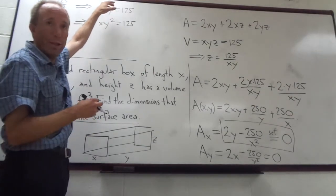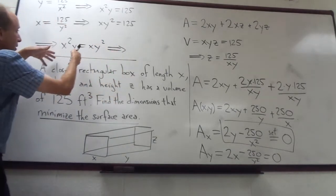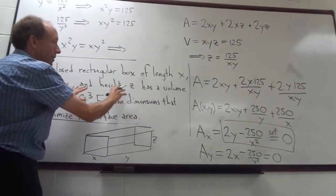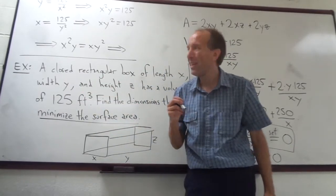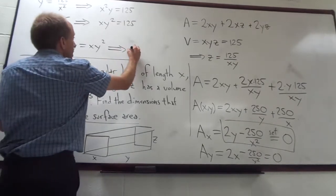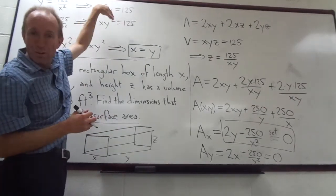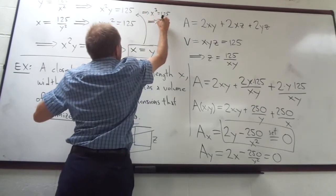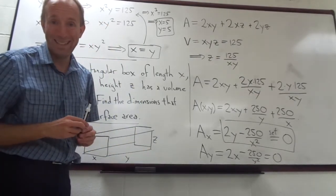Since x = y, substituting back into x²y = 125 gives x³ = 125, so x = 5. And since y = x, y = 5 as well. We've found one critical point: (5, 5). And z = 125/(xy) = 125/25 = 5. So x = y = z = 5. The dimensions that minimize the surface area are 5 by 5 by 5 — it's actually a cube.